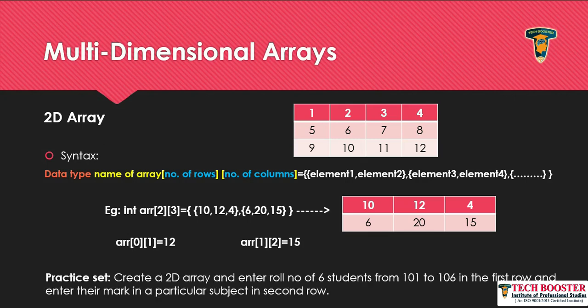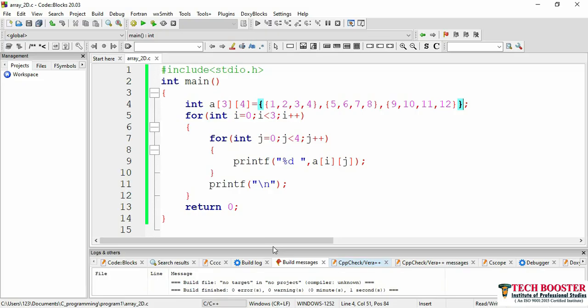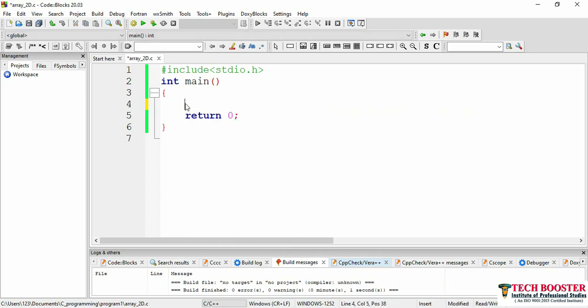Now let's implement a practical exercise. We'll create a 2D array and store roll numbers of 6 students from 101 to 106 in the first row, and their marks for a particular subject in the second row. The roll numbers will be generated automatically by incrementing, while the marks will be entered by the user. Let me open code block and modify the previous program.